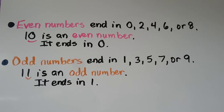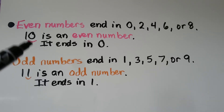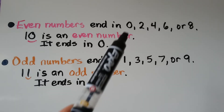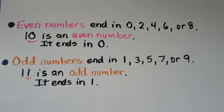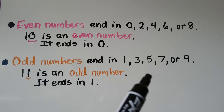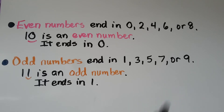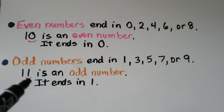Even numbers end in 0, 2, 4, 6, or 8. So we know 10 is an even number because it ends in 0 — that's the rule. Odd numbers end in 1, 3, 5, 7, or 9. So we know 11 is an odd number because it ends in 1.